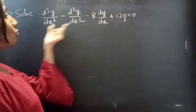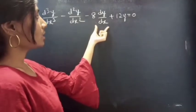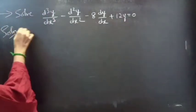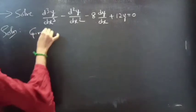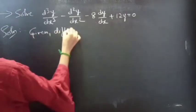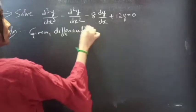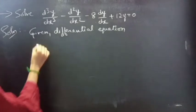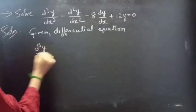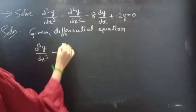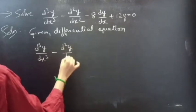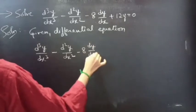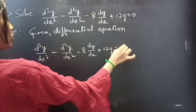The problem: d cube y by dx cube minus d square y by dx square minus 8 into dy by dx plus 12y equals to 0.